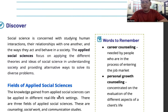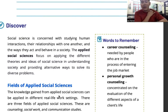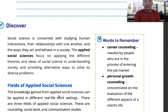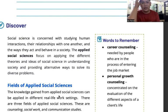To look at some words to remember: we have career counseling, which is needed by the people who are in the process of entering the job market. And we have professional growth counseling, which is concentrated on the evaluation of different aspects of clients' life. Social science is concerned with human interaction, their relationships with one another, and the ways they act and behave in societies.